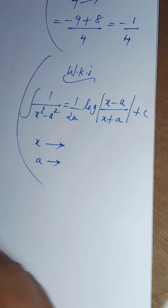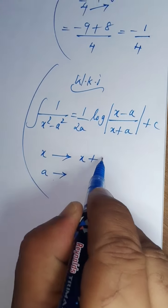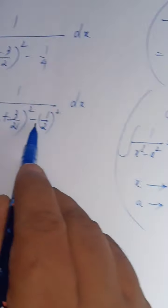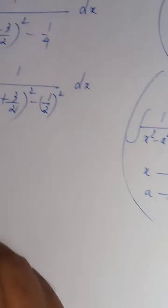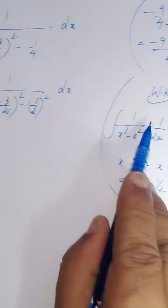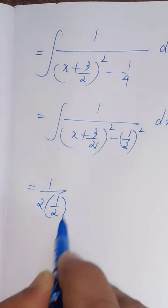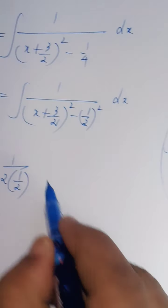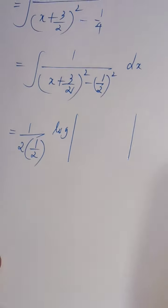X plus a plus c. This is x, x plus 3 by 2. X can be replaced by x plus 3 by 2, and a should be replaced by 1 by 2. That is equal to, here is the formula, 1 by 2a, 1 by 2a that is equal to 1 by 2. Log modulus of x minus a by x plus a.